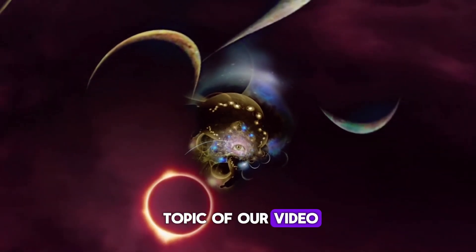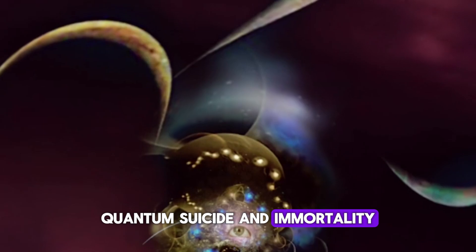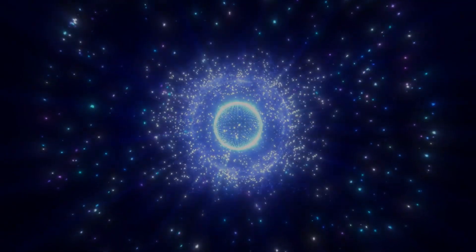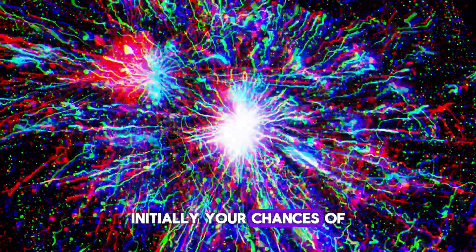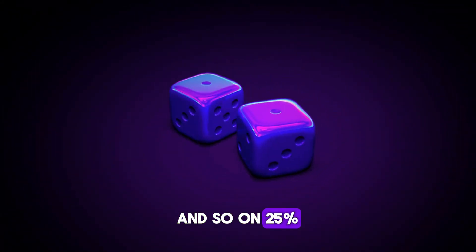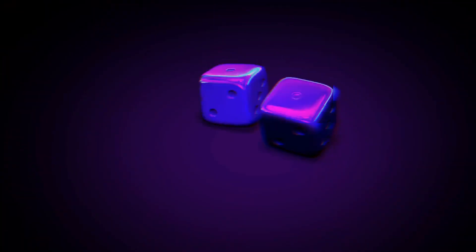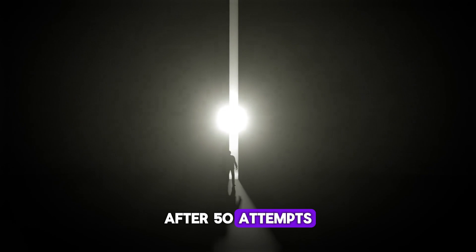Now back to the topic of our video, quantum suicide and immortality. Take the Schrödinger's cat and replace the cat with yourself, it's the only way to do it. Now measure the electron. Initially, your chances of survival are 50%. And so on, 25%, 12.5%, 6.25%, 3.25%.